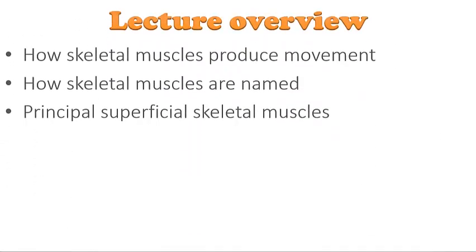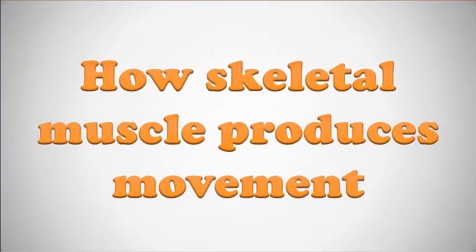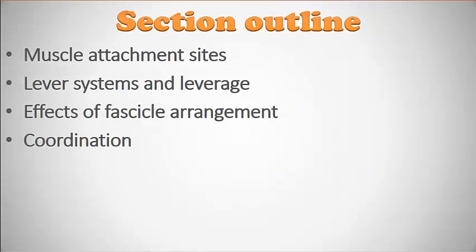In this video lecture we're going to be talking about the muscular system. There are three parts: how skeletal muscles produce movement, how skeletal muscles are named, and a review of the principal superficial skeletal muscles of the anterior and posterior skeleton. In the first section we'll cover muscle attachment sites, the origin and insertion, levers and leverage, the effects of fascicle arrangement, and coordination.